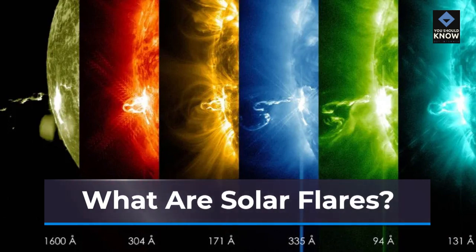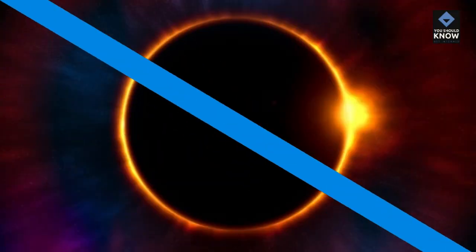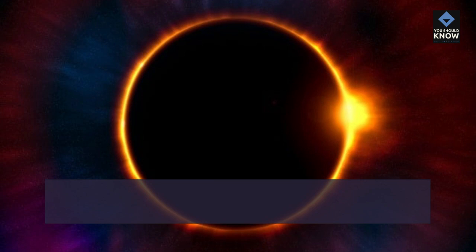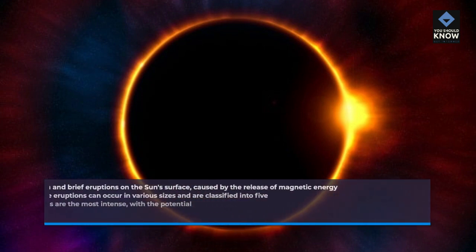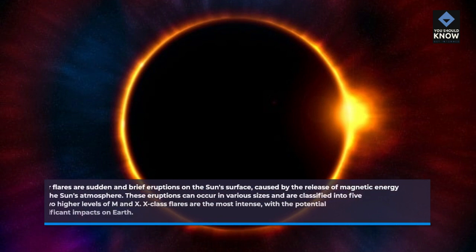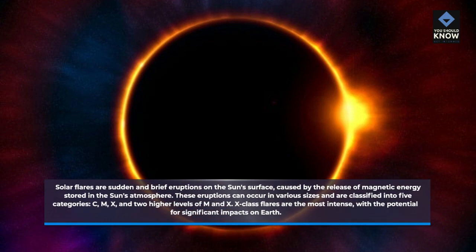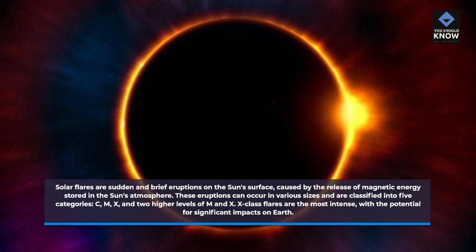Solar flares are sudden and brief eruptions on the Sun's surface, caused by the release of magnetic energy stored in the Sun's atmosphere. These eruptions can occur in various sizes and are classified into five categories: C, M, X, and two higher levels. M and X class flares are the most intense, with the potential for significant impacts on Earth.